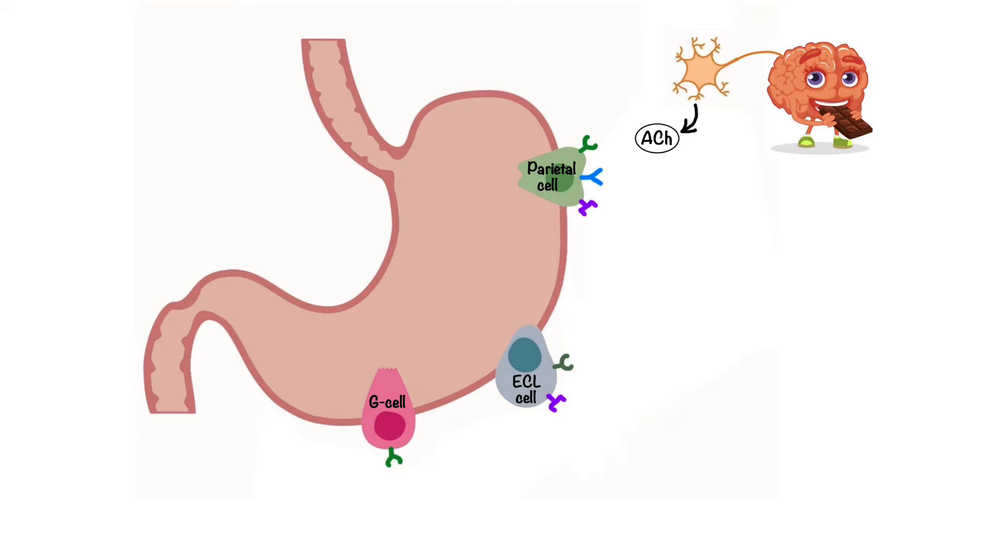Acetylcholine exerts its effects in the stomach directly through activation of muscarinic M3 receptors on parietal cells, as well as indirectly through activation of M1 receptors on enterochromaffin-like cells to initiate histamine release and M3 receptors on G-cells to initiate gastrin release.